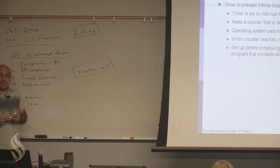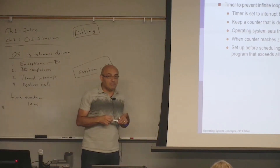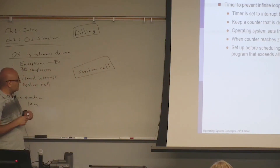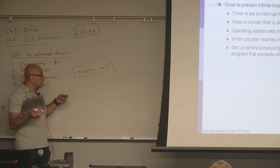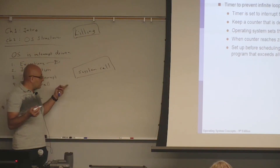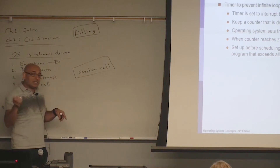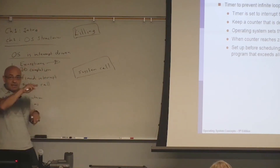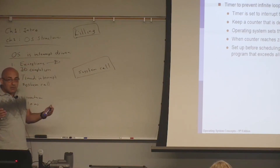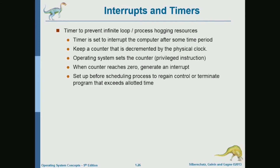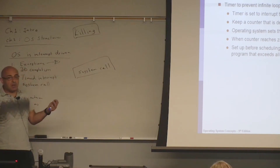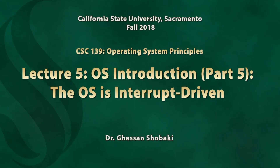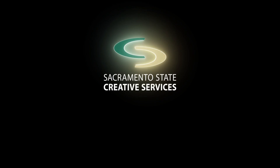A user program is not allowed to do privileged operations directly — it must go through the operating system via a system call. A system call is like making a function call, but it's a special kind where the implementation is in the kernel, not in a user-level library. System calls are usually implemented using interrupts. Whether it's an interrupt or a system call instruction, control will be given to the operating system — it's the application program saying: now I need the operating system to do this for me.